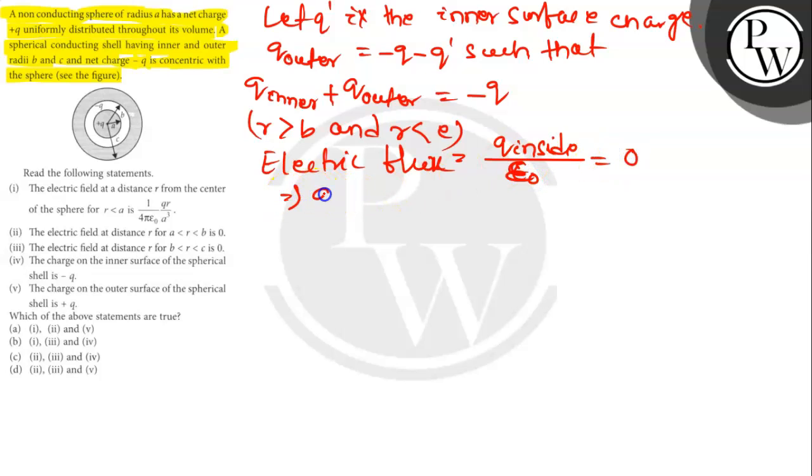Q_inside for B < R < C is equal to Q1 plus Q, which equals Q. So Q_inner is equal to -Q and Q_outer is equal to 0.